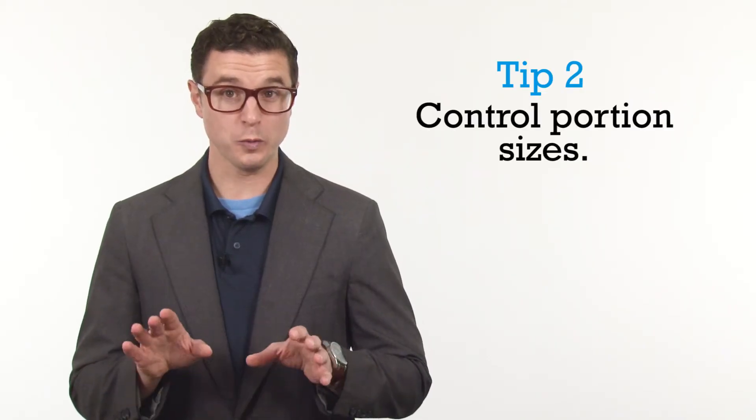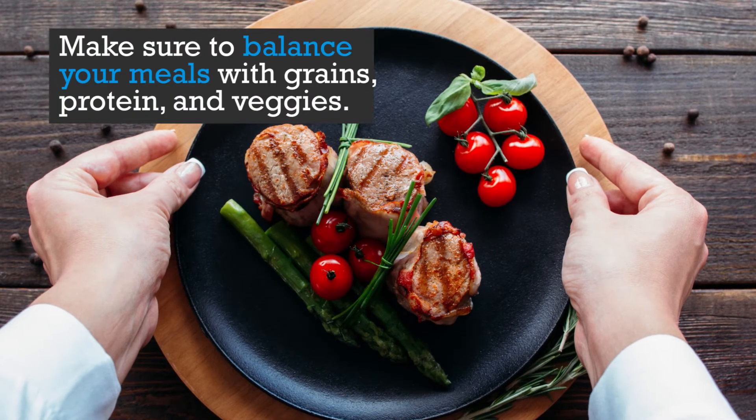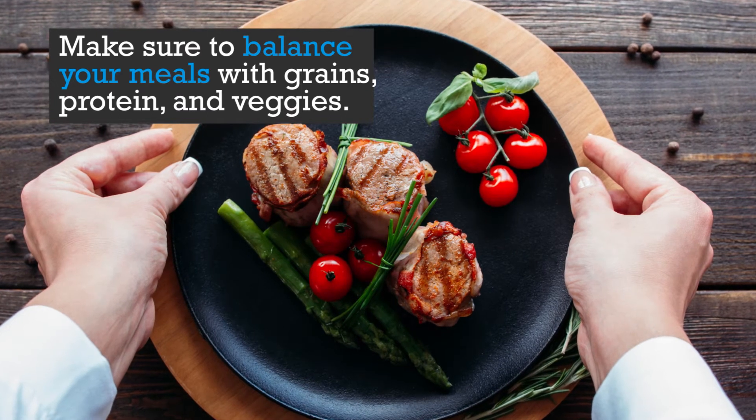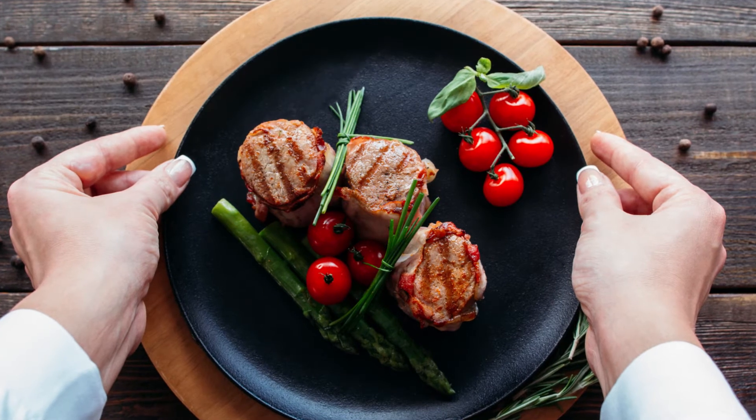Tip two, control portion sizes. Cut down on calories by shrinking your plate. One meal might include a little protein like an egg, chicken breast or tofu, a half cup of grains like oatmeal or rice, and fresh vegetables like leafy greens.